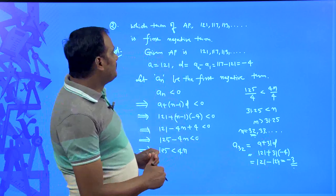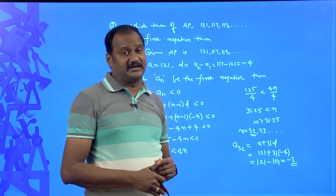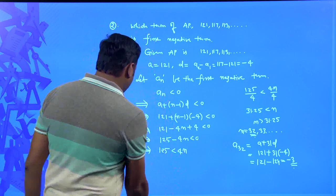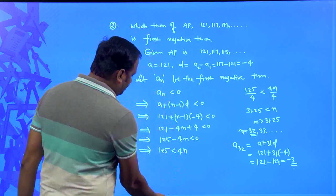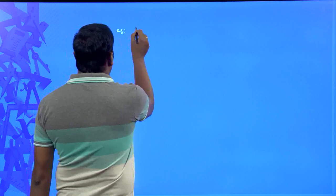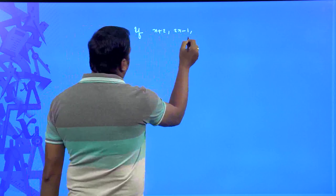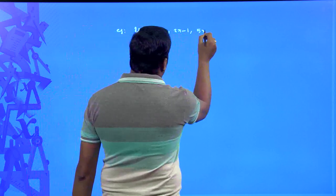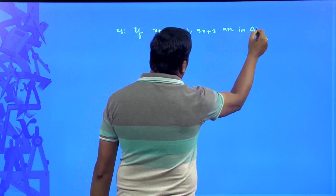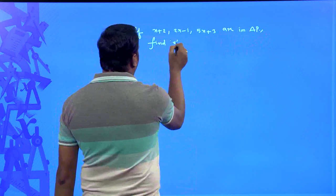This way we can answer problems using the nth term of arithmetic progression. Next example: if x + 2, 2x − 1, and 5x + 3 are in arithmetic progression, find the value of x.